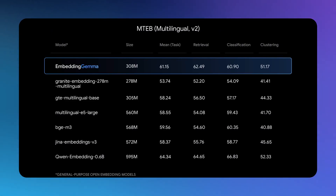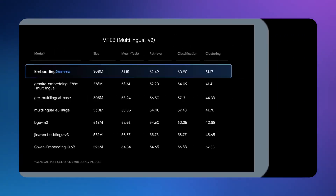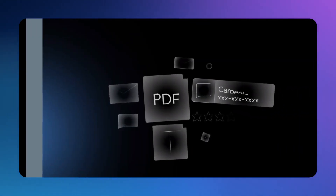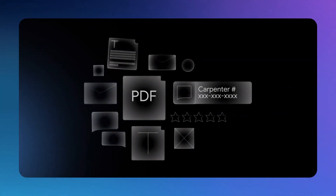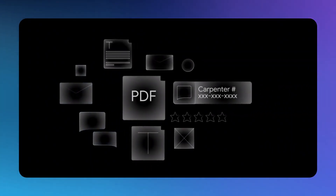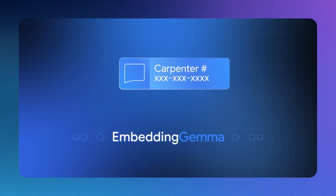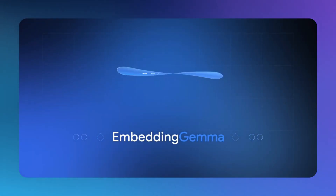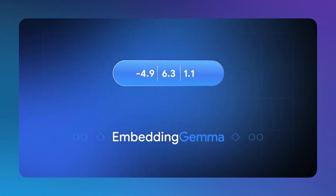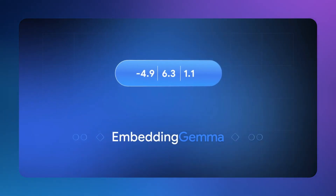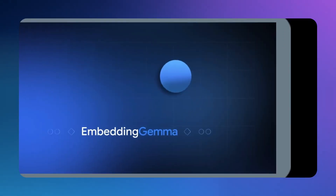Let me explain what embeddings actually are. You know how humans understand that 'dog' and 'puppy' are similar words, but computers see them as completely different? Embeddings fix this — they turn words into numbers that capture meaning.